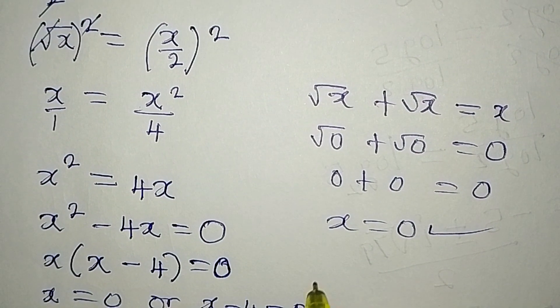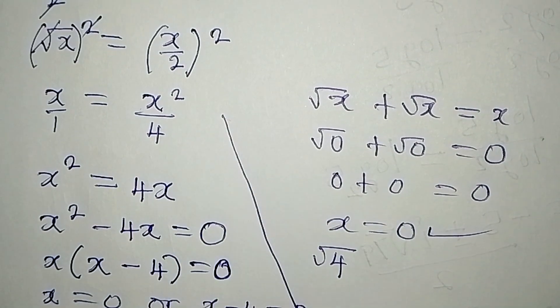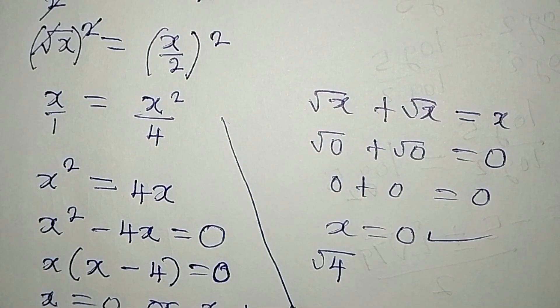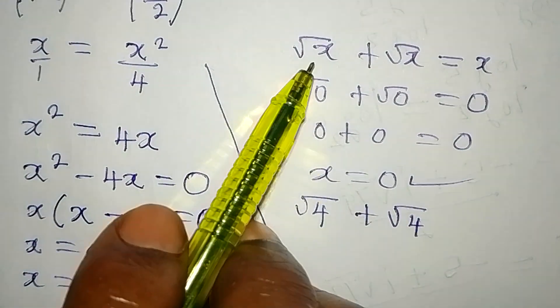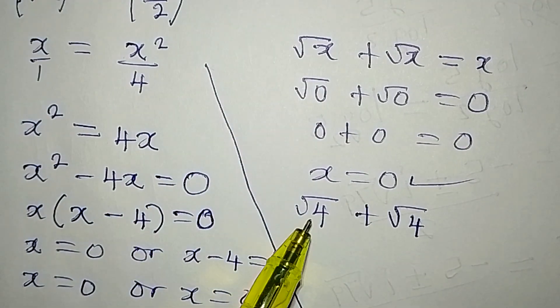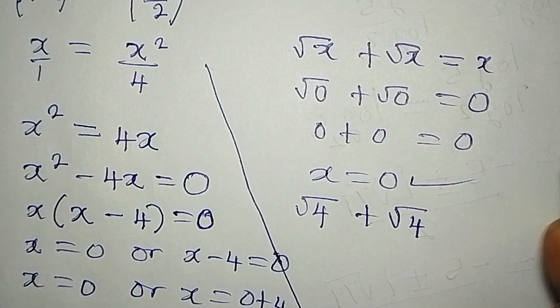Then we have square root of 4. So we have square root of 4 plus square root of 4, because in place of x I'm writing 4.